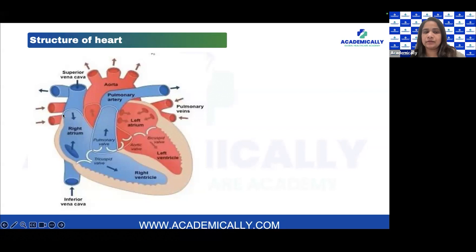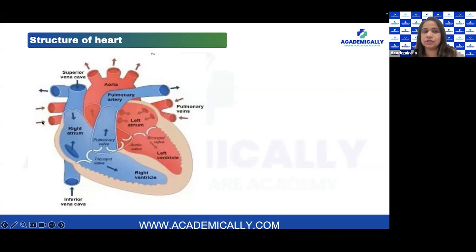There are two vena cavas: the superior vena cava and the inferior vena cava. The superior vena cava is responsible for carrying all the deoxygenated blood from the upper part of the body to the right side of the heart, whereas the inferior vena cava brings all the deoxygenated blood from the lower part of the body to the right side of the heart.